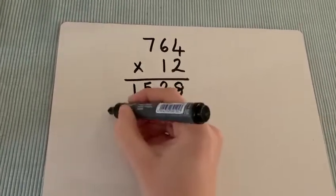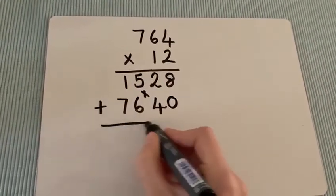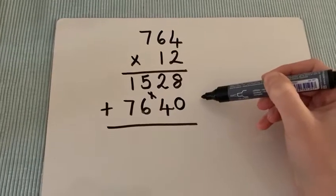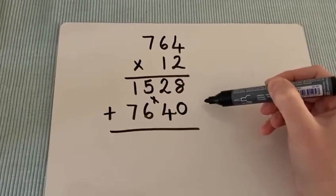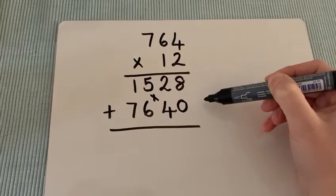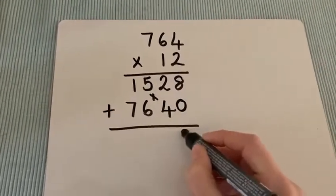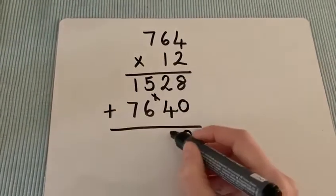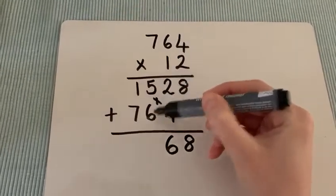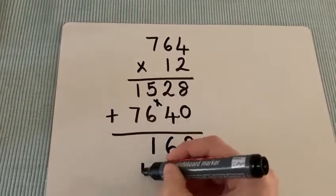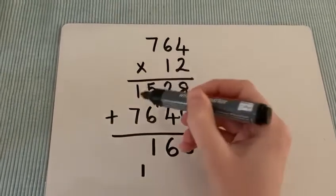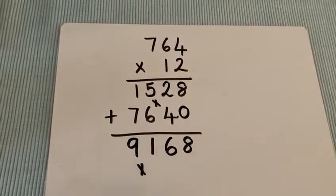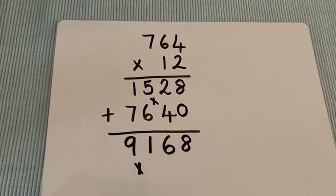And now we're going to add those numbers together. So we've got to add 1528 and 7640 to achieve our answer. So 8 and 0 gives us 8. 2 and 4 gives us 6. 5 and 6 gives us an answer of 11, 1 in and 1 down. And 1 and 7 gives us 8 plus 1 more is 9. We cross out the 1 to show that we've used it. 9168. And this is our answer.